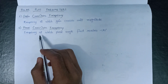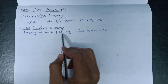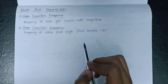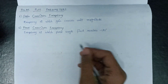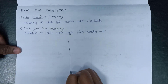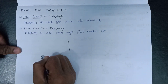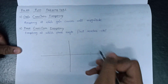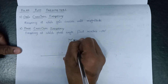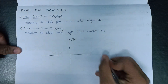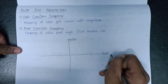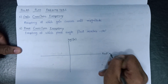Phase crossover frequency is the frequency at which the phase angle first reaches minus 180 degrees. Let us understand these two terms by the help of a polar plot. This is our imaginary axis, that is the j-omega axis, and this is our real axis, that is the sigma axis.